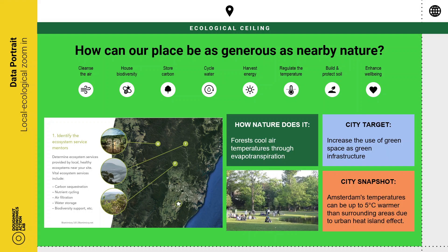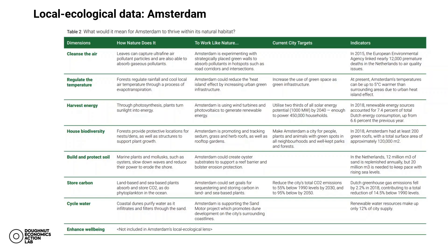Due to a lack of time and resources, the team in Amsterdam took a desk-based approach, mapping how nature performs on each dimension based on published sources alongside the closest official city targets available and illustrative statistics of performance. This approach doesn't match up to biomimicry standards, but it still provided a valuable input for officials and change makers to start to see what they were doing and to discuss possible design strategies that could take their city closer to matching the performance of the wider ecosystem in which it is embedded.